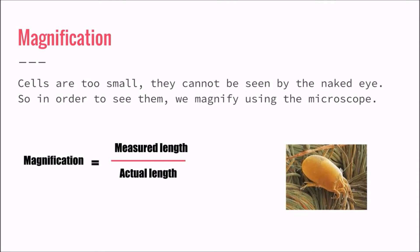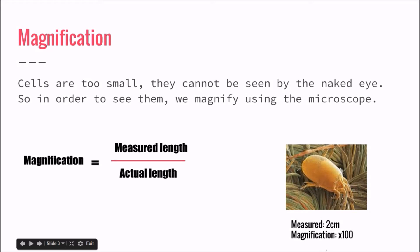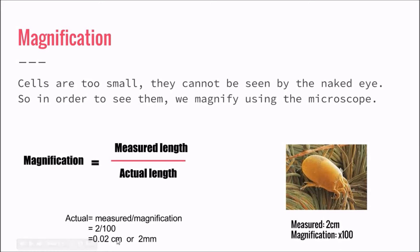For example, we have this small bug over here. Let's say it measures from this point to this point 2 centimeters, and we have magnified it 100 times in order to get it into this size. So its actual length is equal to measured length over the magnification — that's 2 over 100, which is equal to 0.02 centimeters or 2 millimeters.